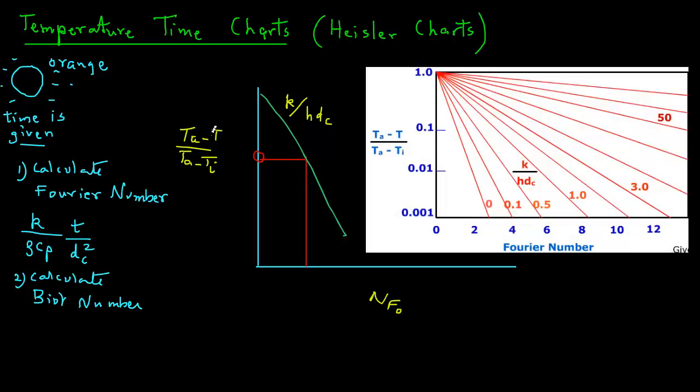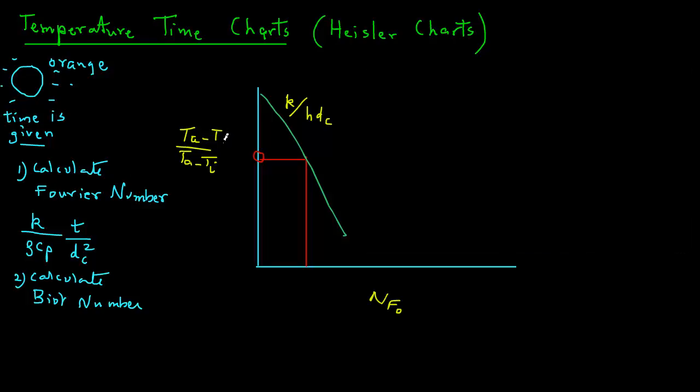That will be the temperature ratio. And in the temperature ratio, whatever that value is will tell us what is the unknown T, that is the center temperature of that orange after that orange was placed for that known time.